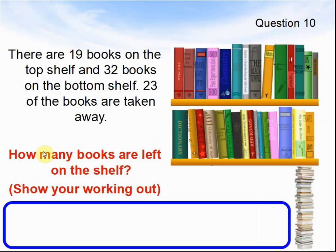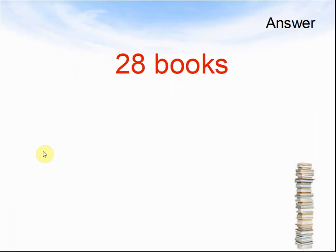Question 10. There are 19 books on the top shelf and 32 books on the bottom shelf. 23 of the books are taken away. How many books are left on the shelf? Show your working. Pause the video until you are ready for the answer. The answer is 28 books.